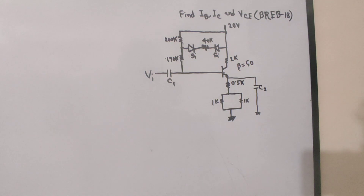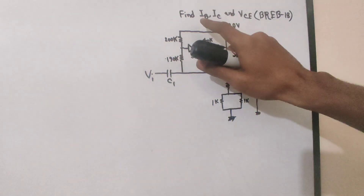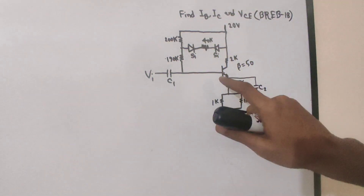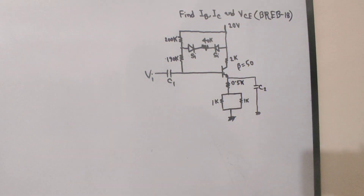The first thing we need to know: the first question asks us to find iB, iC — the base current and collector current.